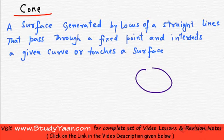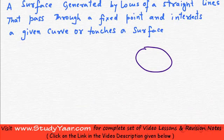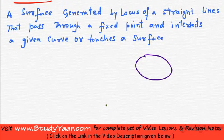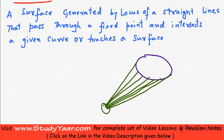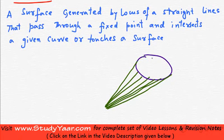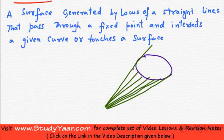Let's assume we have a curve and a fixed point. The cone is the locus of straight lines that intersect this curve and pass through this point. This is the set of all lines passing through this fixed point and intersecting the given curve. A line doesn't have bounds, so it extends in both directions — I have just shown a part of this cone.